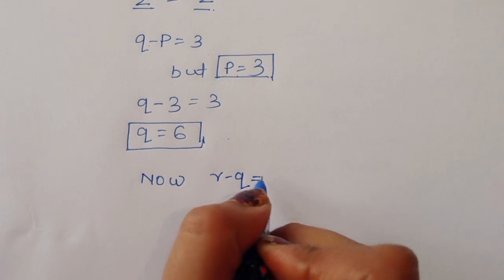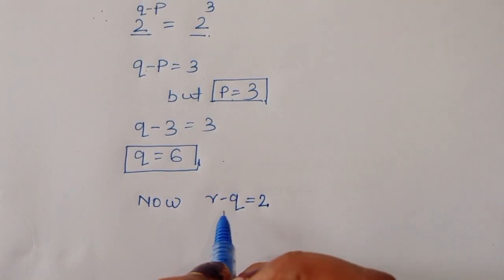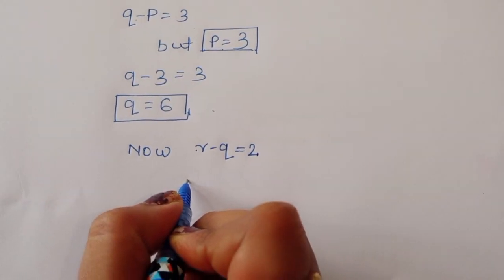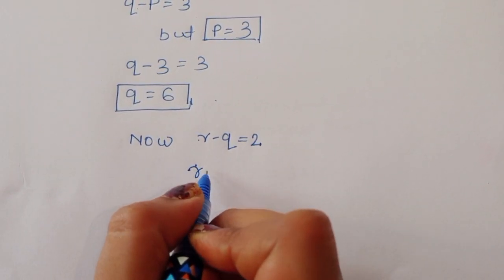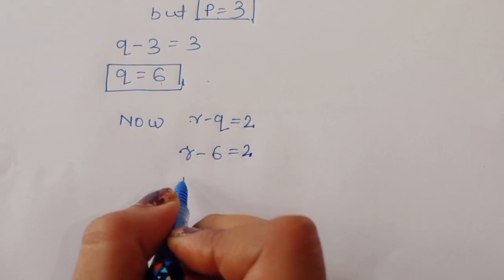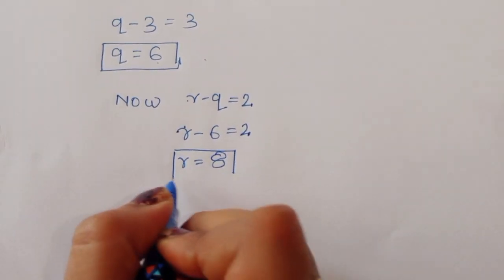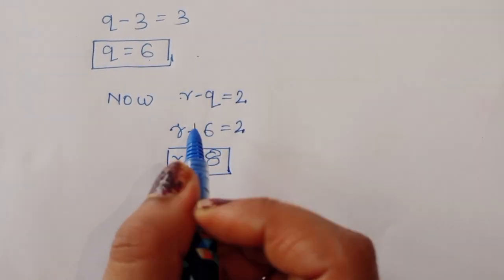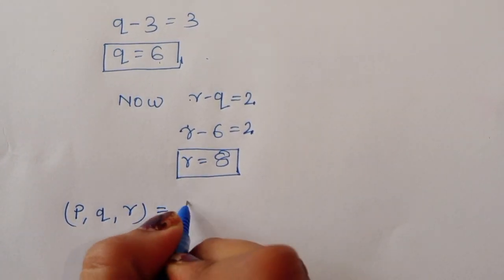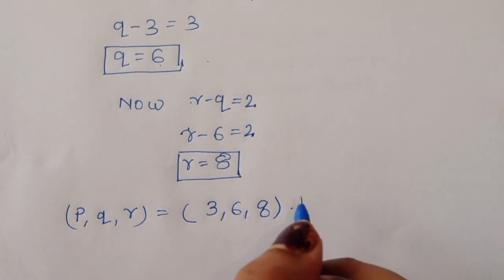From the comparison, R − Q = 2. Since Q = 6, we get R = Q + 2 = 6 + 2 = 8. So we now have P = 3, Q = 6, and R = 8.